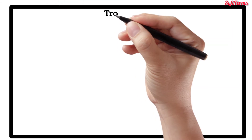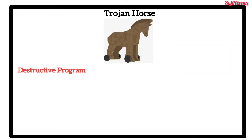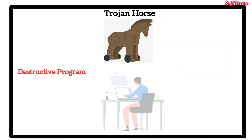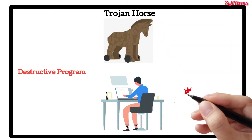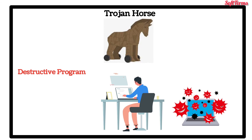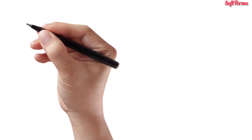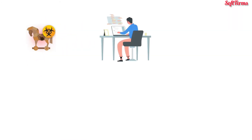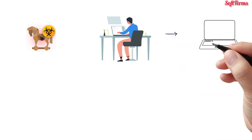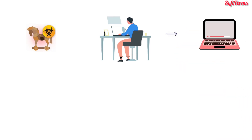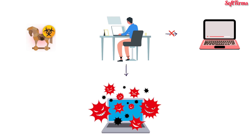Next is Trojan Horse: a destructive program that masquerades as a desired application. Unlike viruses, Trojan Horses do not replicate themselves, but they can be just as destructive. One of the most insidious types of Trojan Horse is a program that claims to rid the computer of viruses, but instead introduces viruses onto the computer.